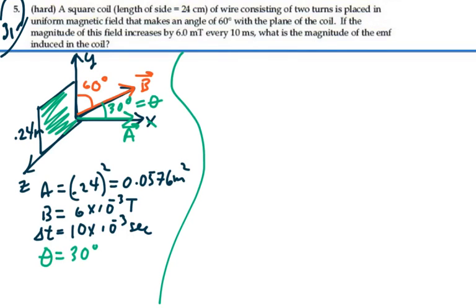So now we have the information we need. If we look at the flux in general for a planar area like this, that's going to be the field times the area times the cosine of the angle between the two vectors.